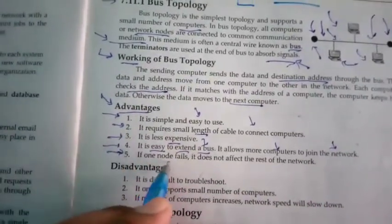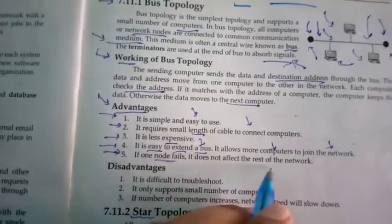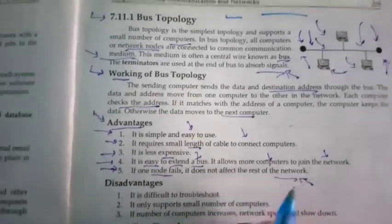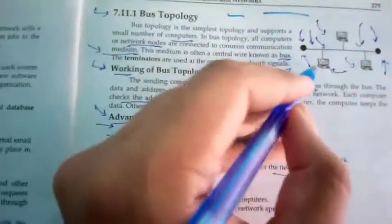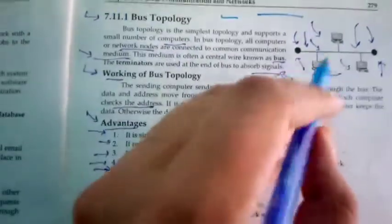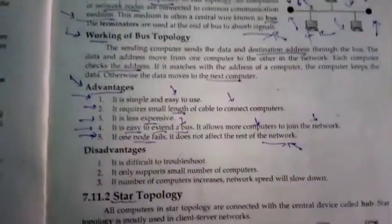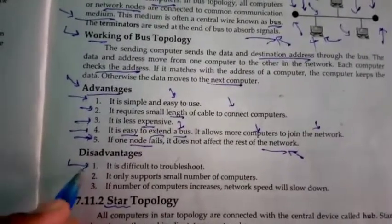Fifth, if one node fails, it doesn't affect the rest of the network. If this computer fails, it doesn't affect the other computers.